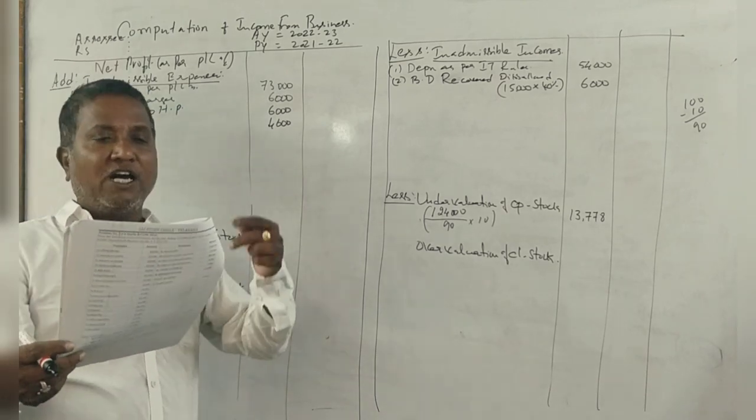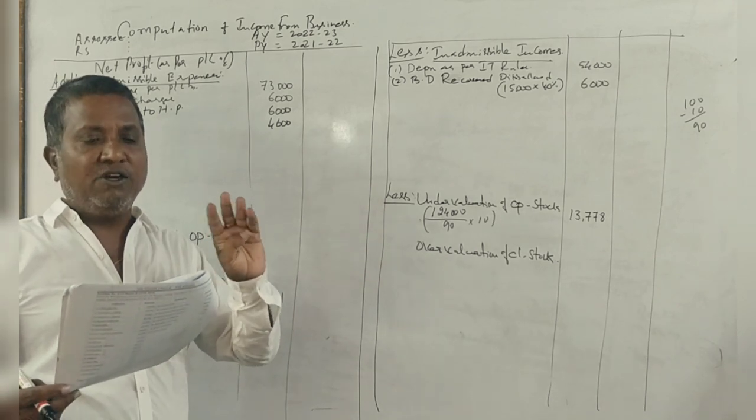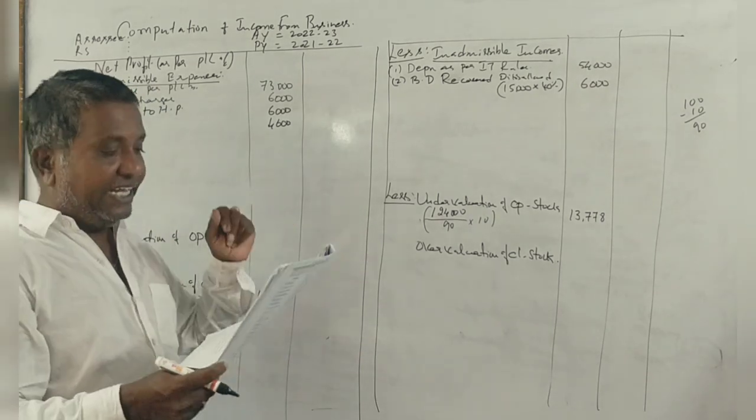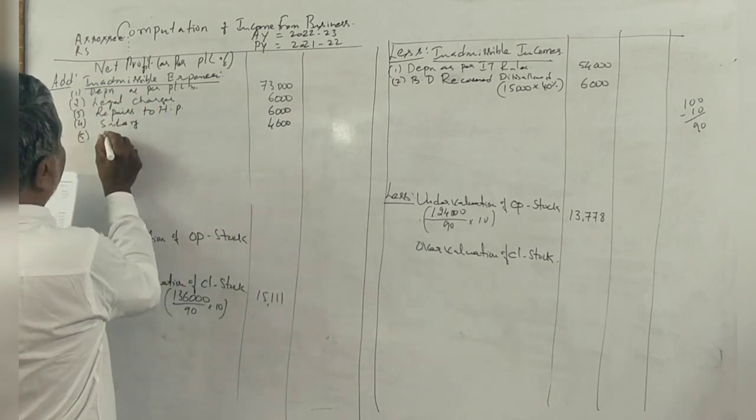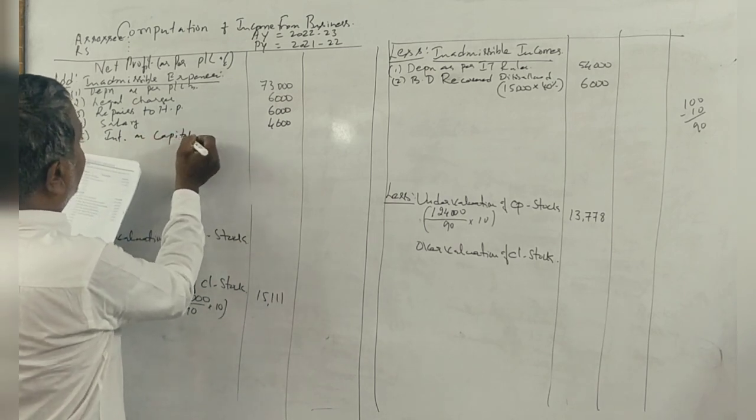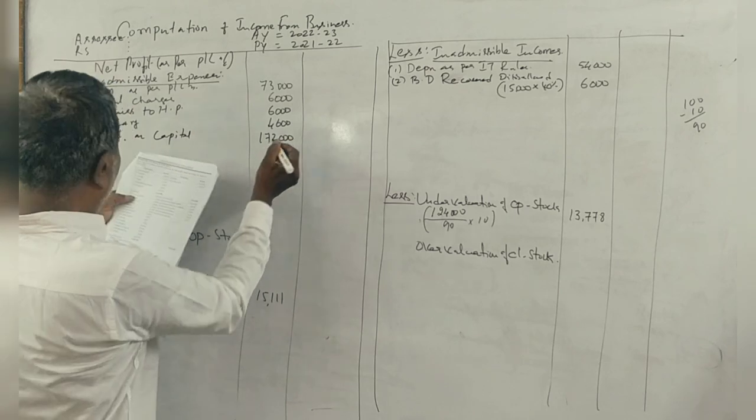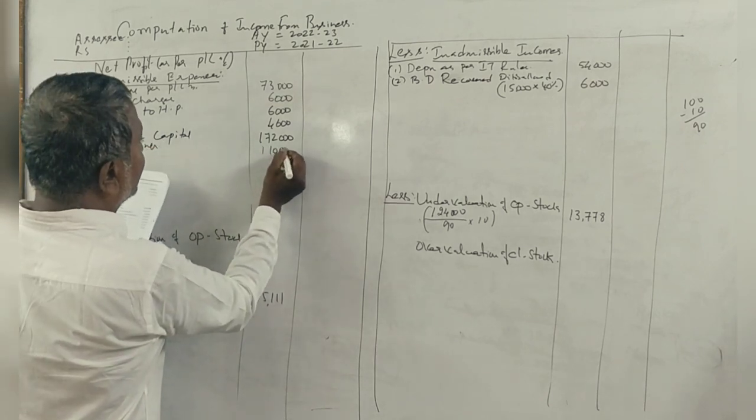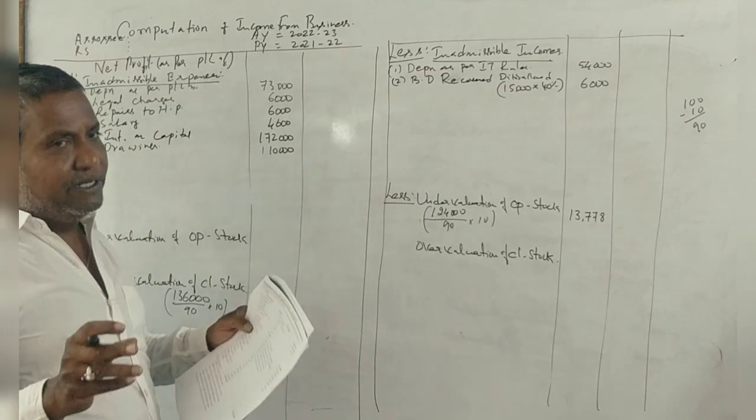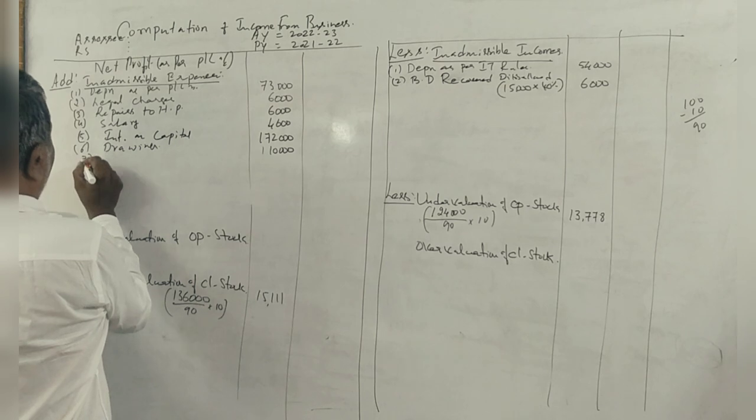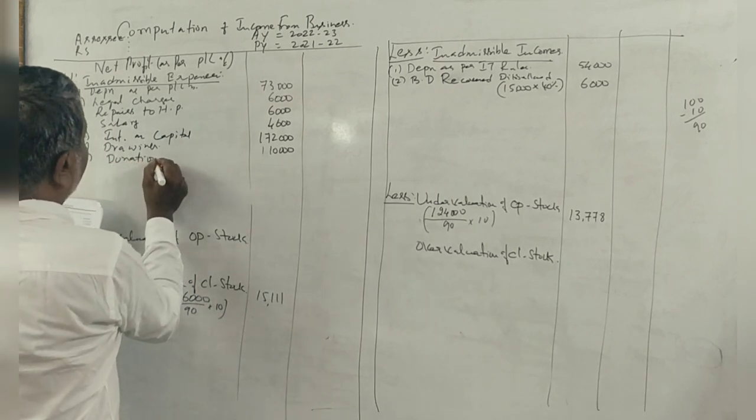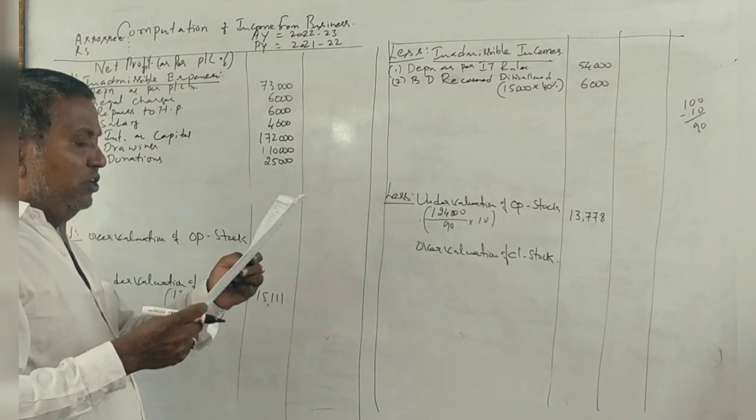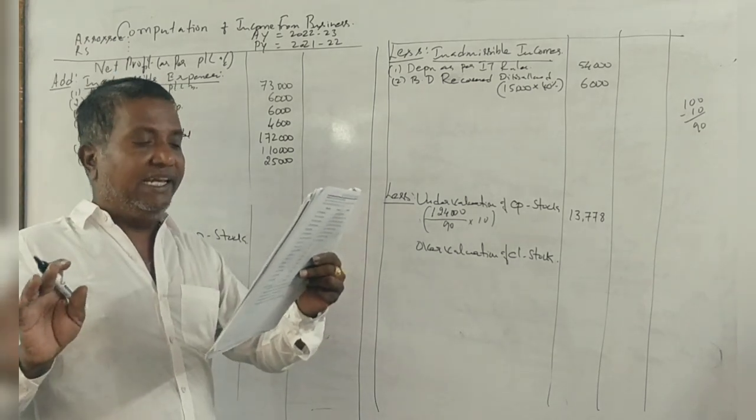Now debit side: opening stock, purchases, carriages, wages, manufacturing expenses, gross profit, salary, interest on capital 1,72,000, drawings 1,10,000, rent and taxes business, donations 25,000, repairs, depreciation, general expenses for business, legal charges, appeal expenses business.